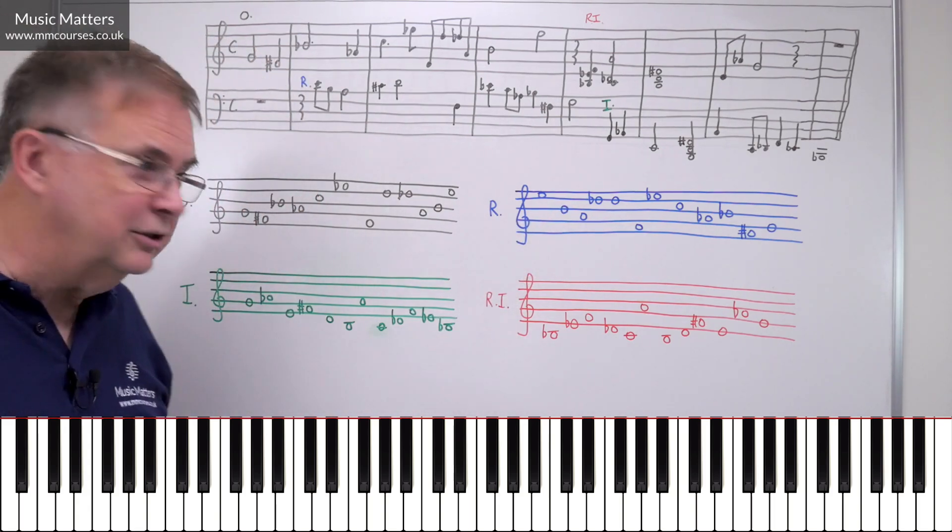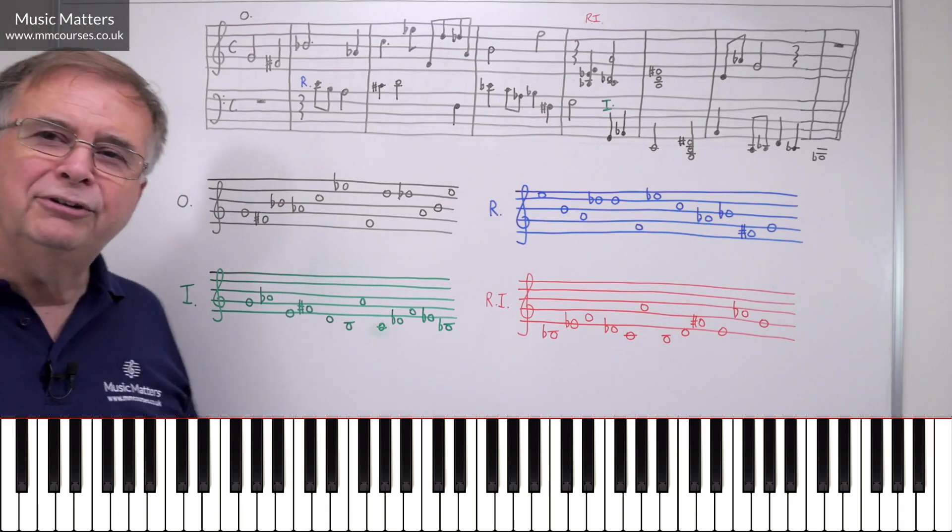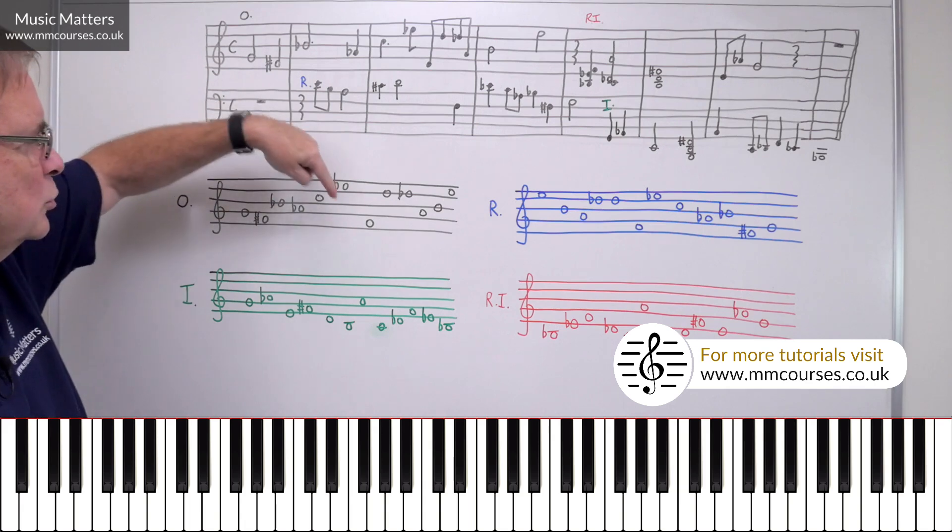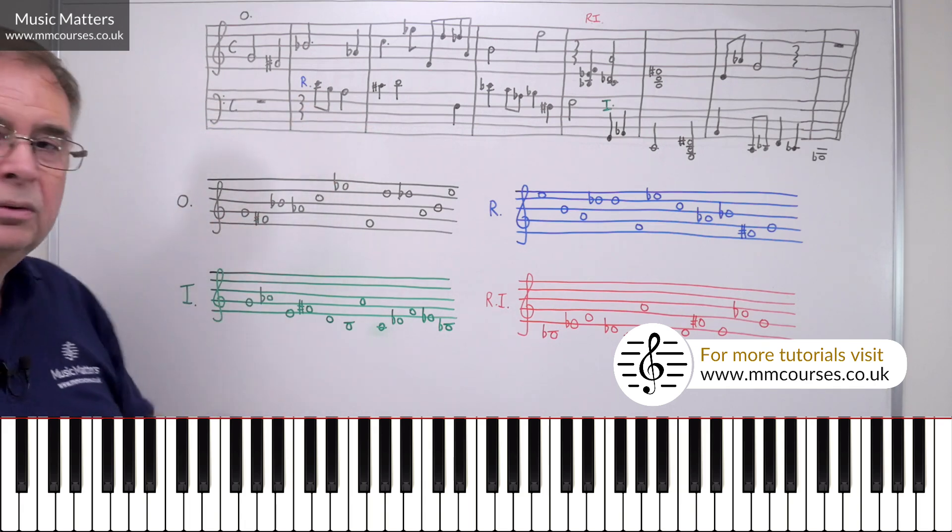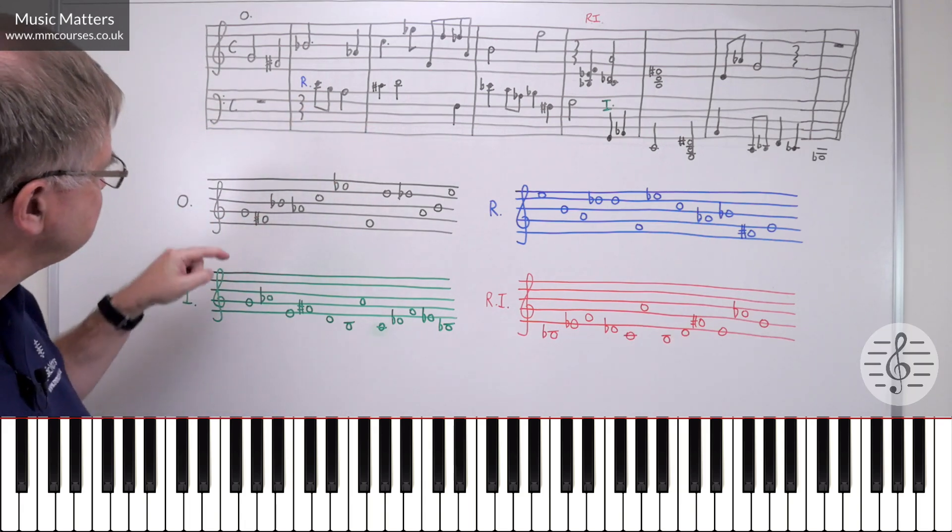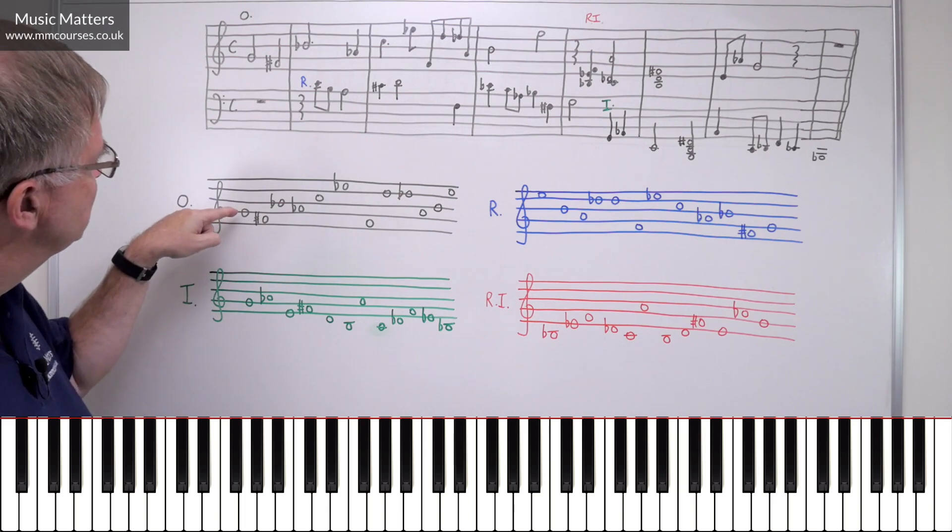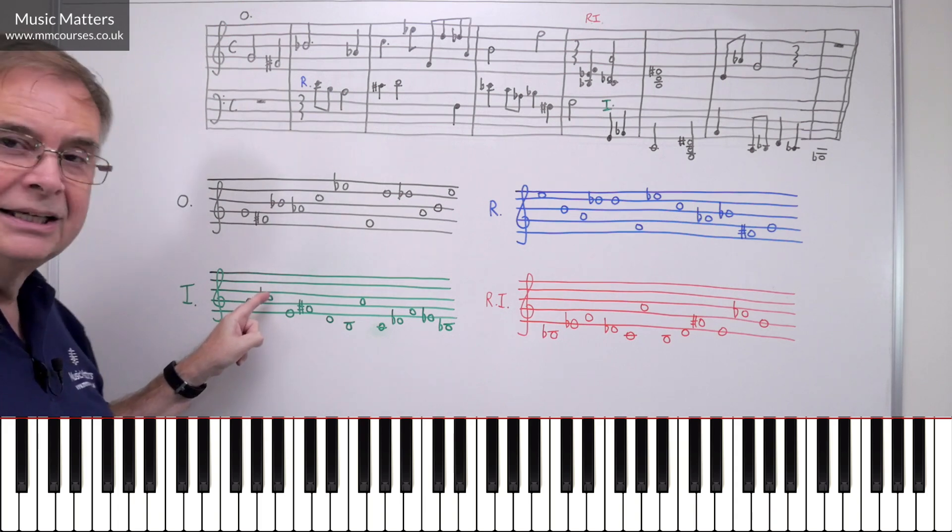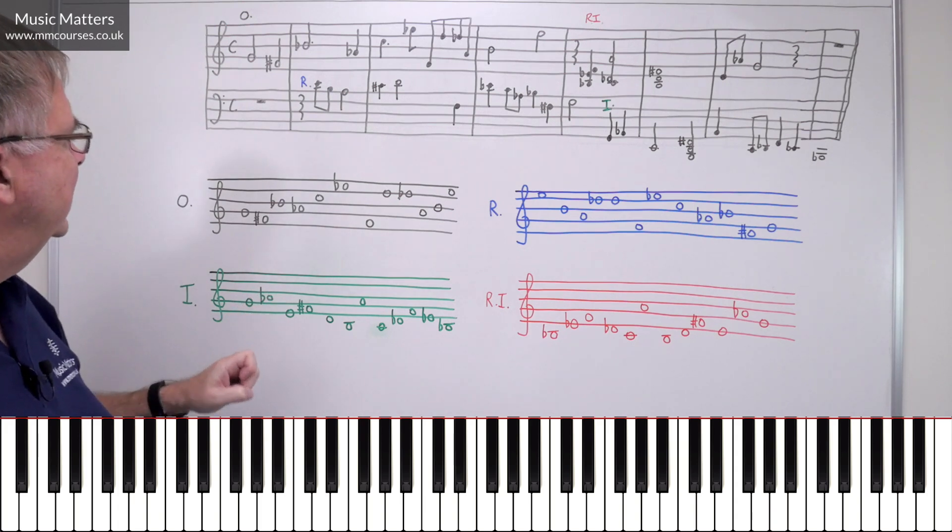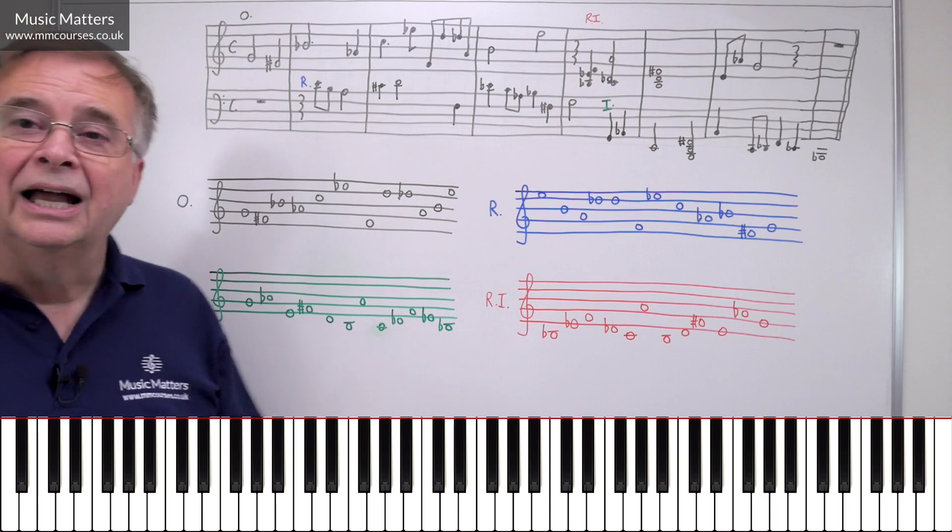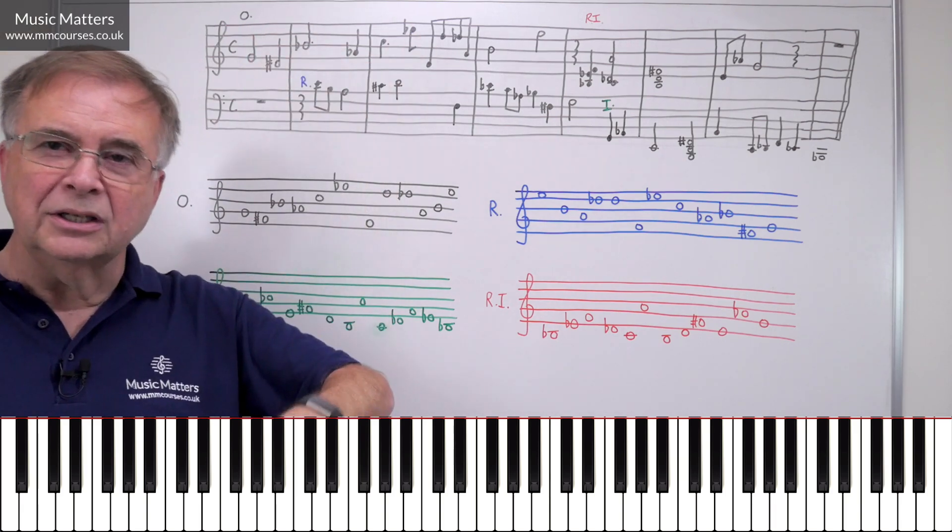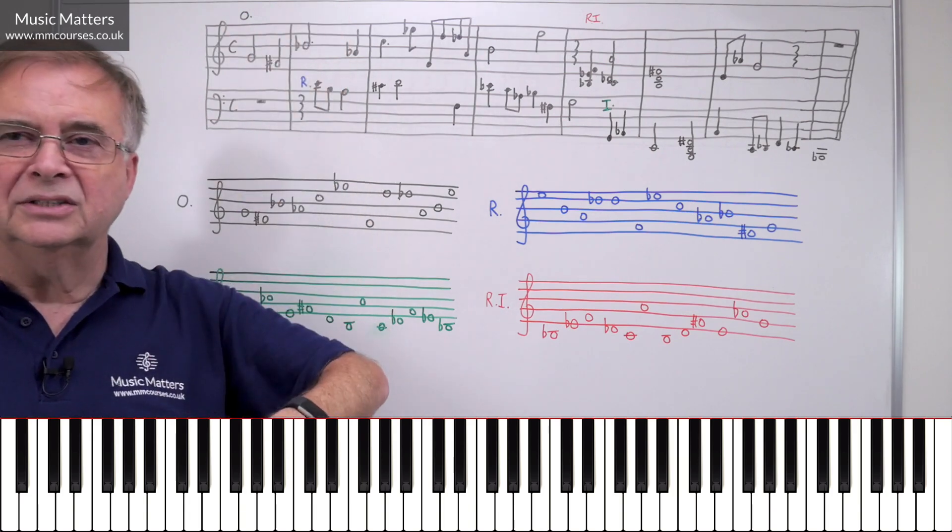Or, if we switch to the green version, you can use it in inversion. And what this means is you take all the intervals of the original row and you invert the interval. So in other words, here it starts on G and it goes down a minor second. So here I'm starting on G and I'm going up a minor second. So you take each of these intervals in turn and you think if it's going up a major third, I'm going to go down a major third. If it's going up a perfect fourth, I'm going to go down a perfect fourth.